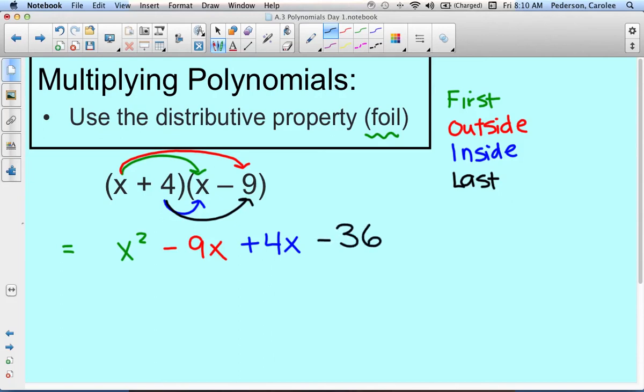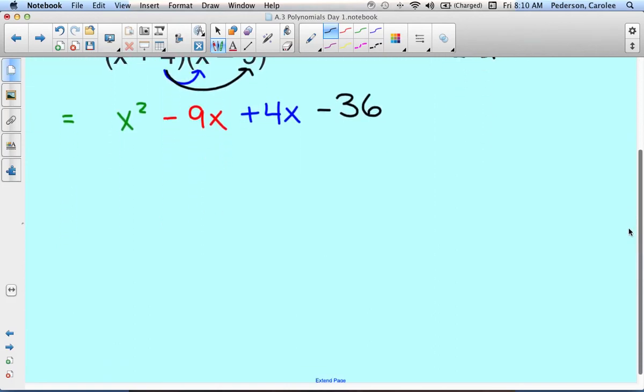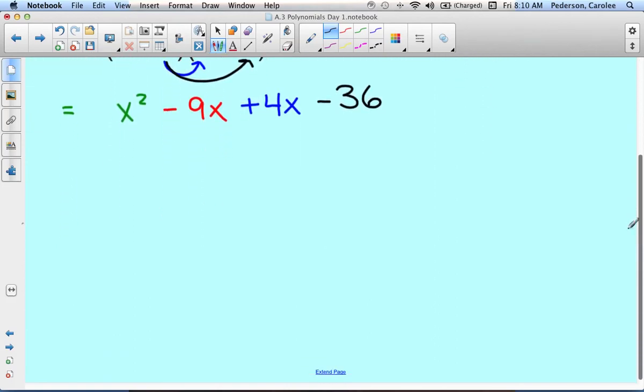And then we combine any like terms that are there. In this case, we have like terms with the blue and the red, these two. So what happens is those combine to negative 5x, and then we have x squared and minus 36.